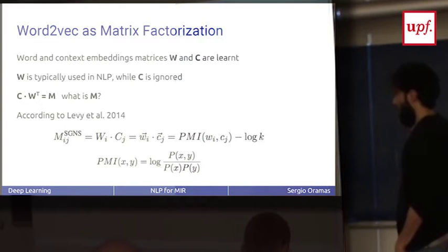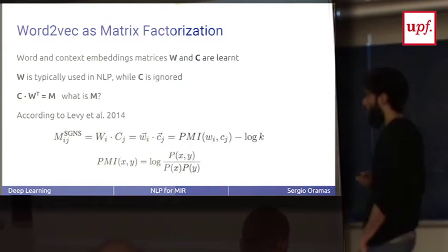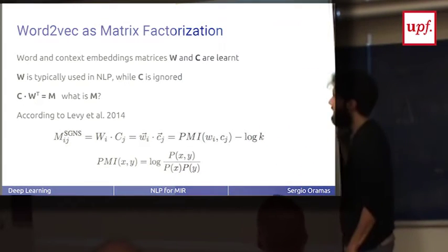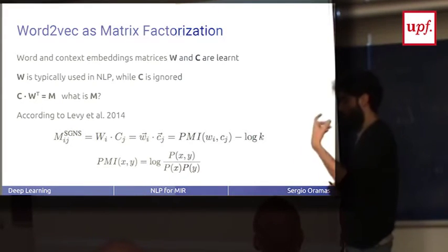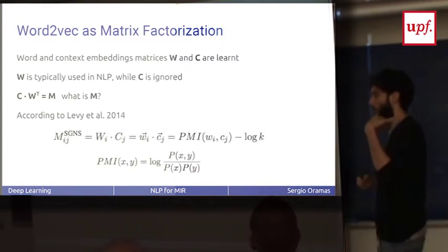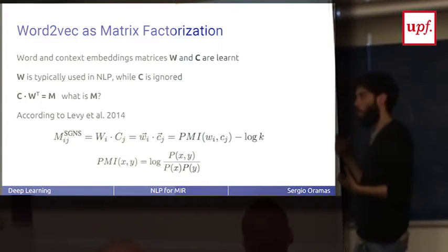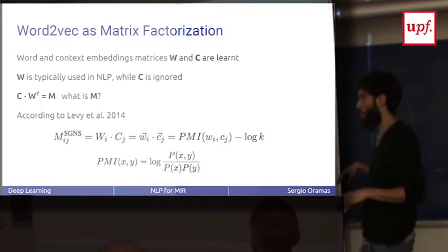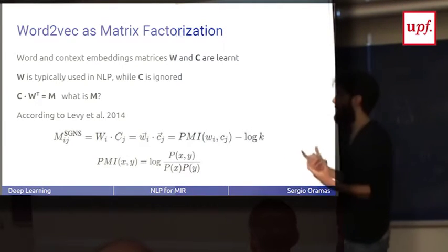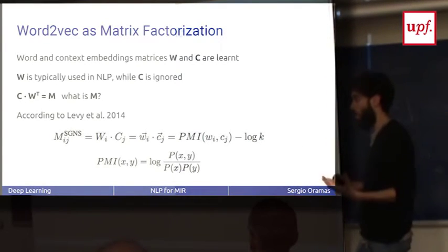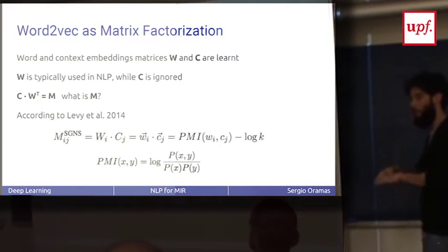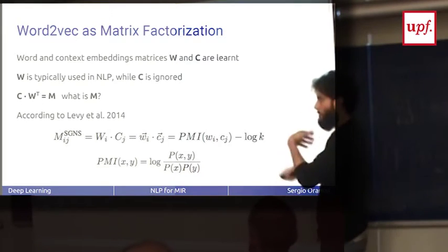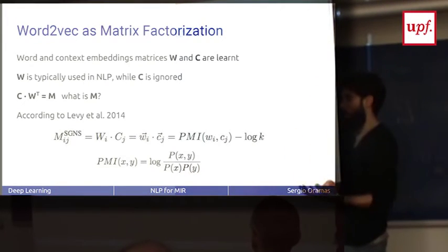In word embeddings we learn two matrices of embeddings: the matrix of words and the matrix of contexts. Typically we use the matrix of words in NLP, but the matrix of contexts is not used. What happens if you do the dot product of the matrix of context and the matrix of words? This matrix is like the pointwise mutual information matrix of words and context. There are some papers based on that that also use the context, not only the word embeddings.